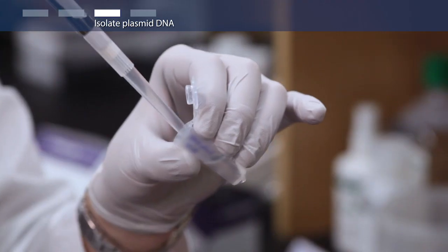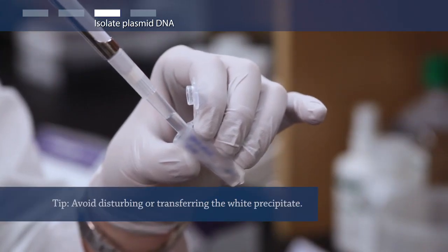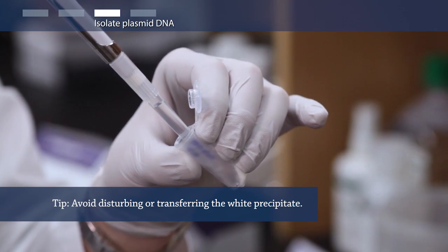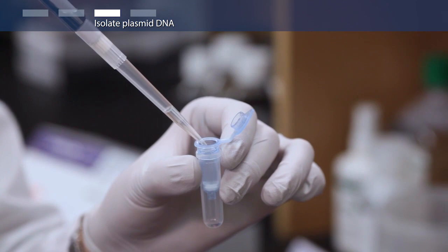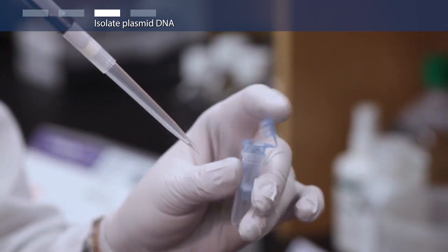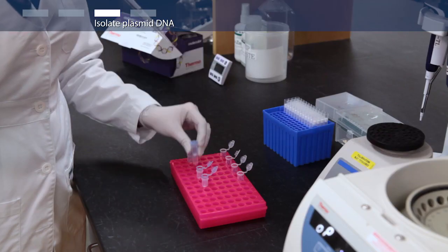Transfer the supernatant, which contains your plasmid DNA, to the gene jet spin column by decanting or pipetting. Centrifuge for one minute. Discard the flow-through and place the column back into the same collection tube.